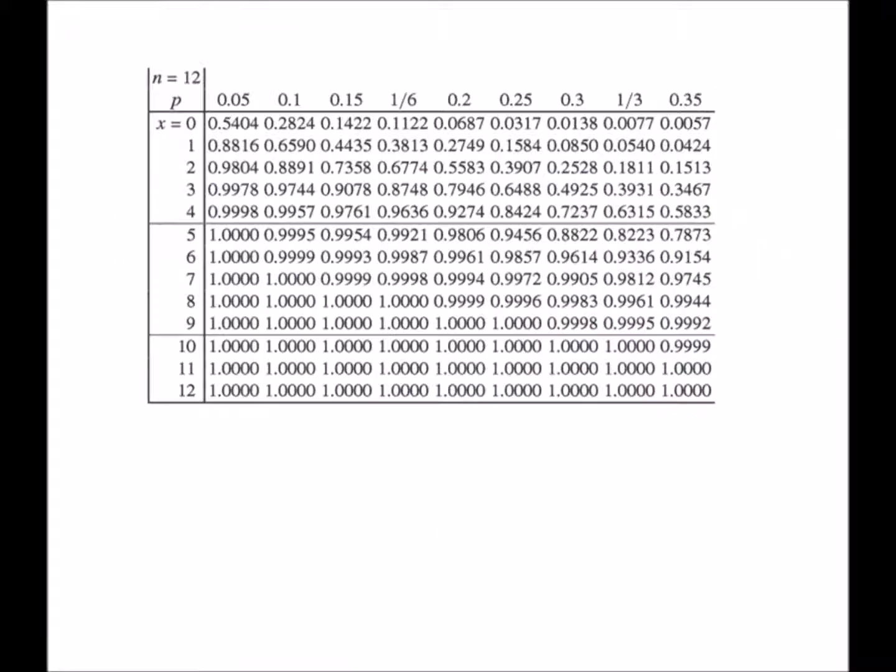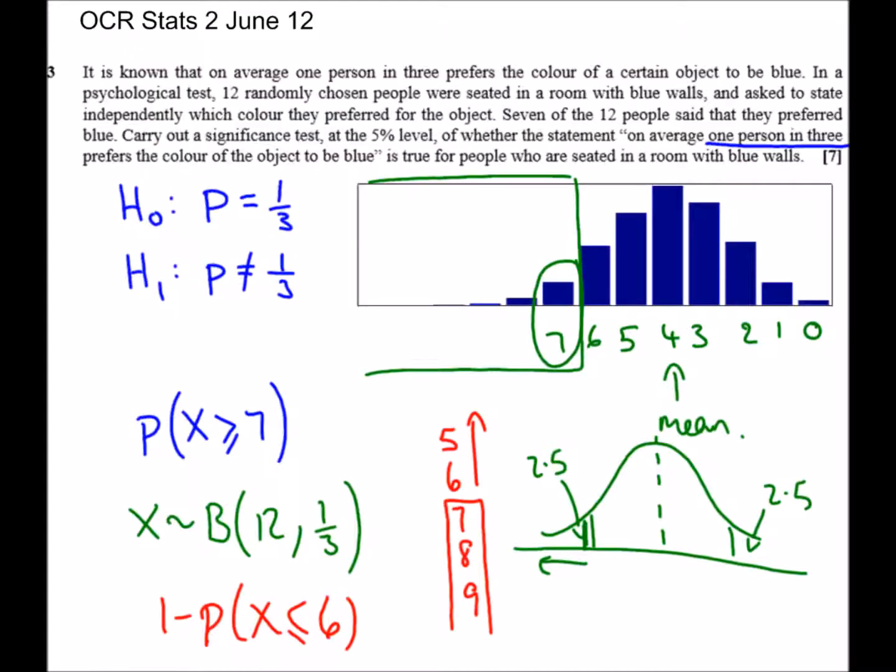And if I have a look on my table, here we've got the table, this is straight from the formula book. You can see we found where N is 12, we're looking for the probability of a third and we're looking for six. So this is 0.9336.